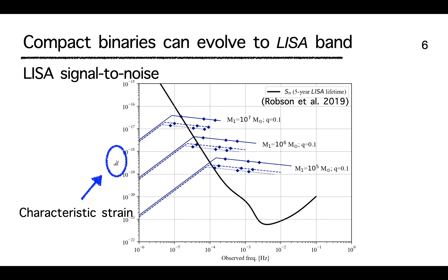To decide which binaries can evolve into the LISA band, we use a recent LISA sensitivity curve from Robson et al. 2019. We illustrate the evolutionary tracks of binaries whose primary masses are 10^5, 10^6, and 10^7 solar masses, assuming a mass ratio of 0.1. In each set of curves, there are three tracks corresponding to redshift values 1, 3, and 5 from top to bottom. We assume that LISA lifetime is 5 years, since LSST operation begins around the mid-2020s and LISA begins around the mid-2030s, though the mission lifetime could range from approximately 5 to 15 years.